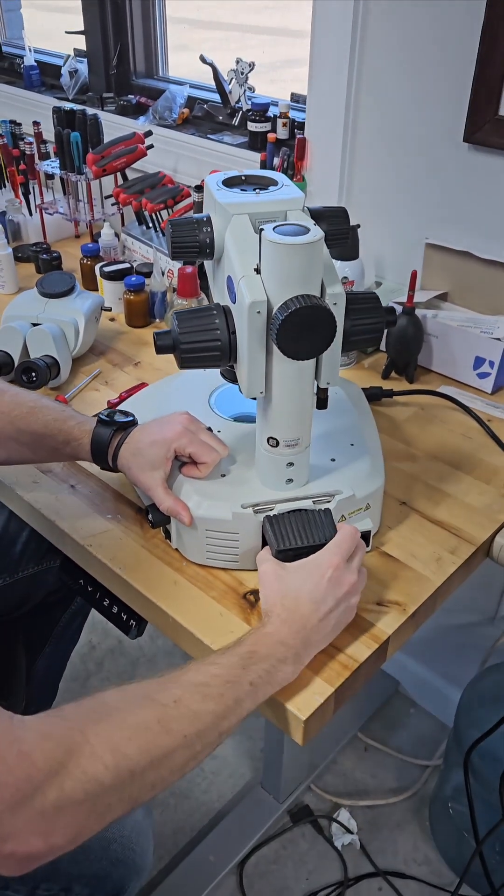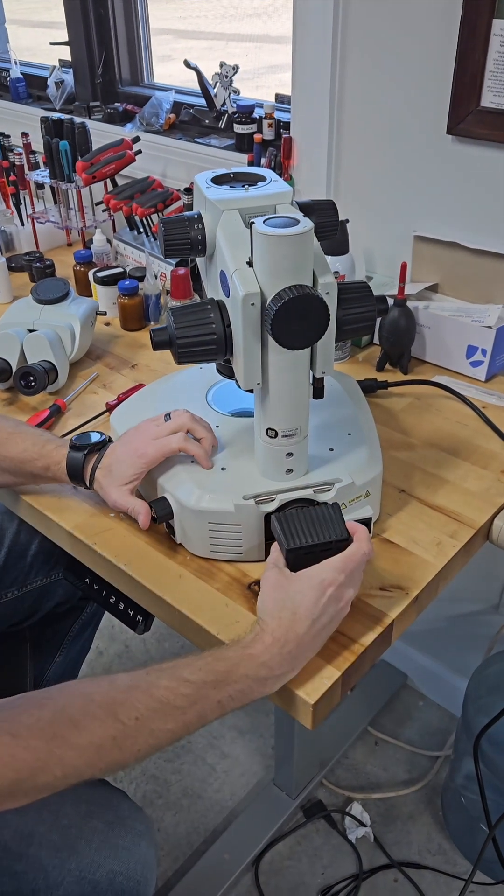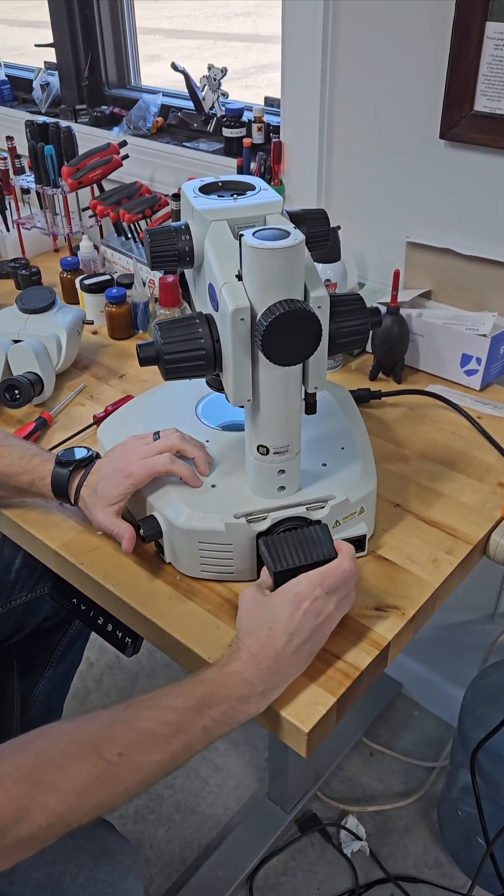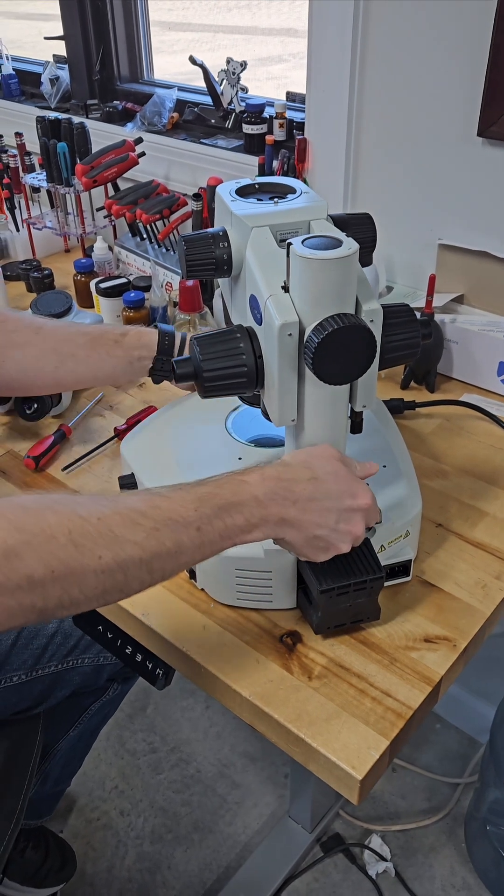Your lamp house on the back here, just to show you, you can pull that out. It's a six volt, 30 watt bulb. If you ever need to change the bulb on this base, it's got a nice handle if you have to move it around the lab.